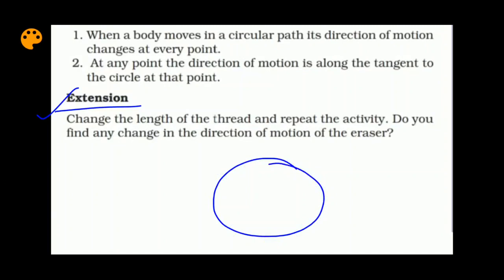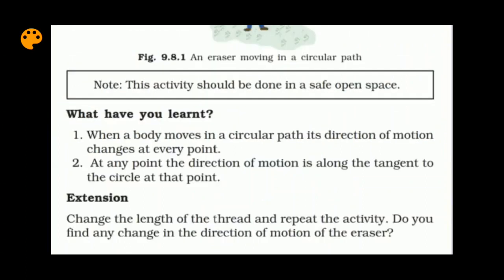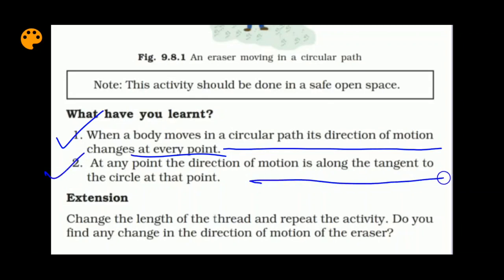Even with a different thread length, the eraser will still change its direction to keep it in a circular track, and the direction of motion will be along the tangent. So with this activity we learn that when a body moves in a circular path, its direction of motion changes at every point, and at any point the direction of motion is along the tangent to the circle — irrespective of the length of the string. Tangent is a line that touches the circle at a single point.